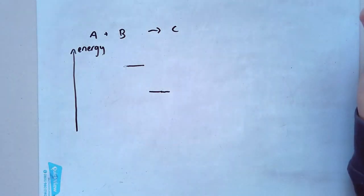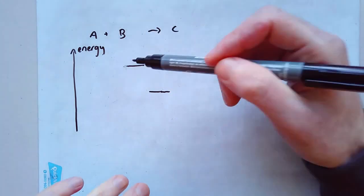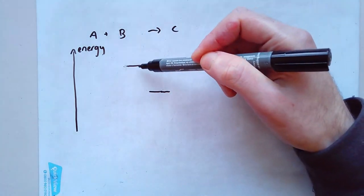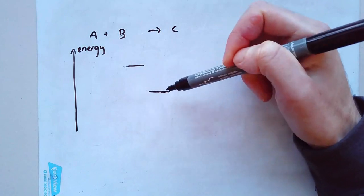In fact this is called a reaction profile. It's just a really simple graph showing the relative difference in energy. So A and B they've got energy up here. C it's got energy down there.